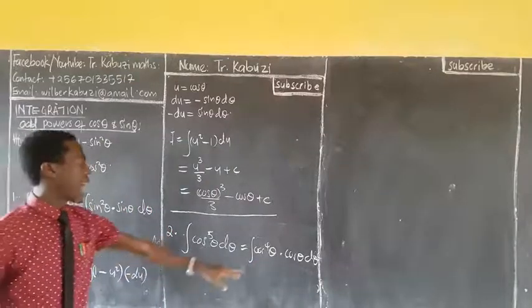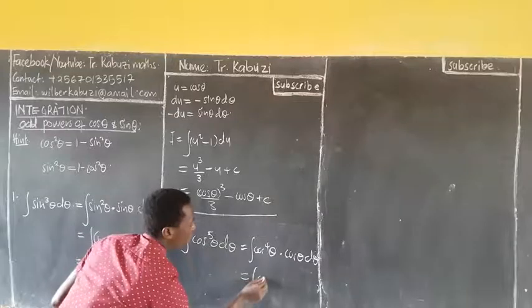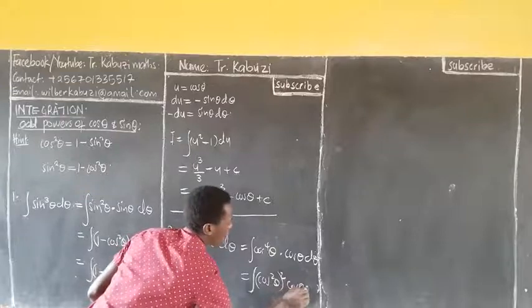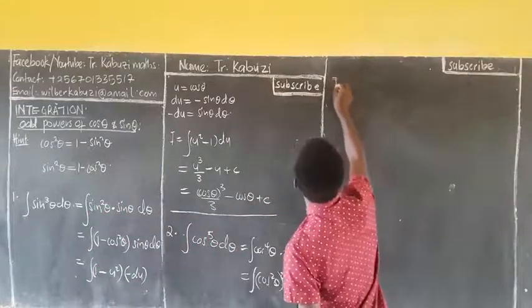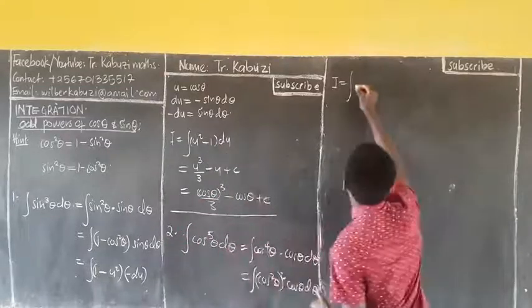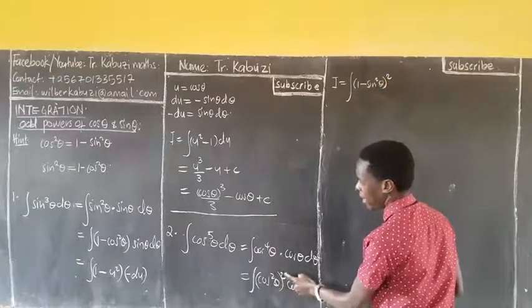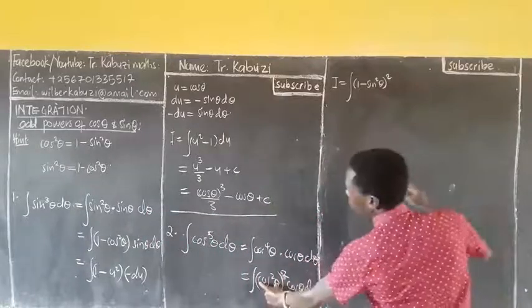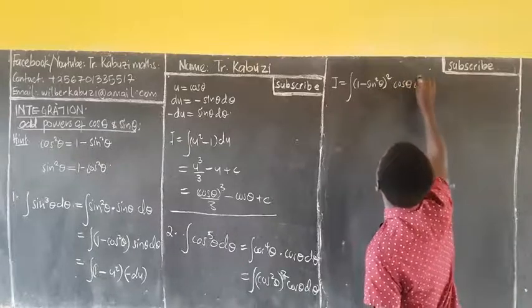From there, I need a square here because I need a square. This is the same as the integral of (cos²θ)² times cosθ dθ. Now where there is a cos²θ, I bring in the identity: 1 − sin²θ. So I'll be having (1 − sin²θ)² times cosθ dθ. This was squared, so when I replace cos²θ, I put (1 − sin²θ) squared, then cosθ dθ outside.